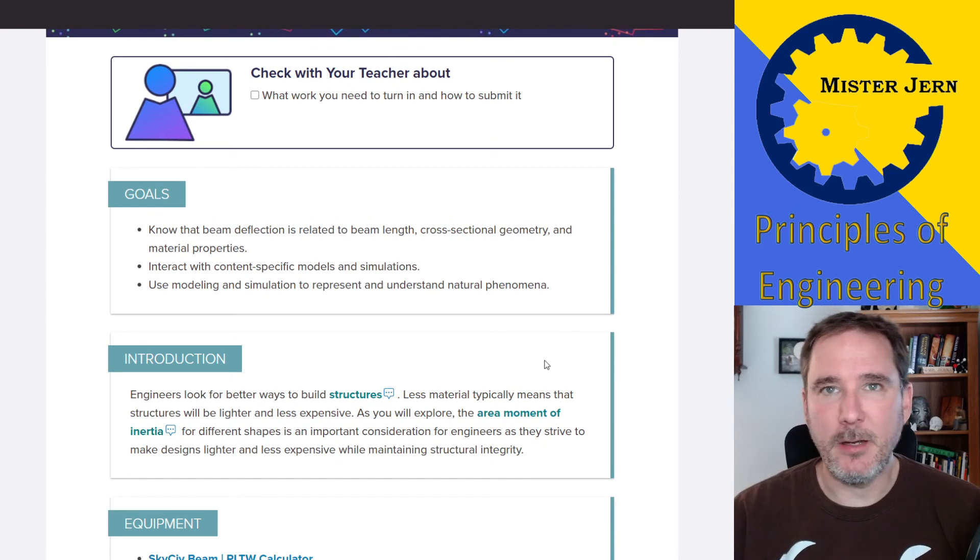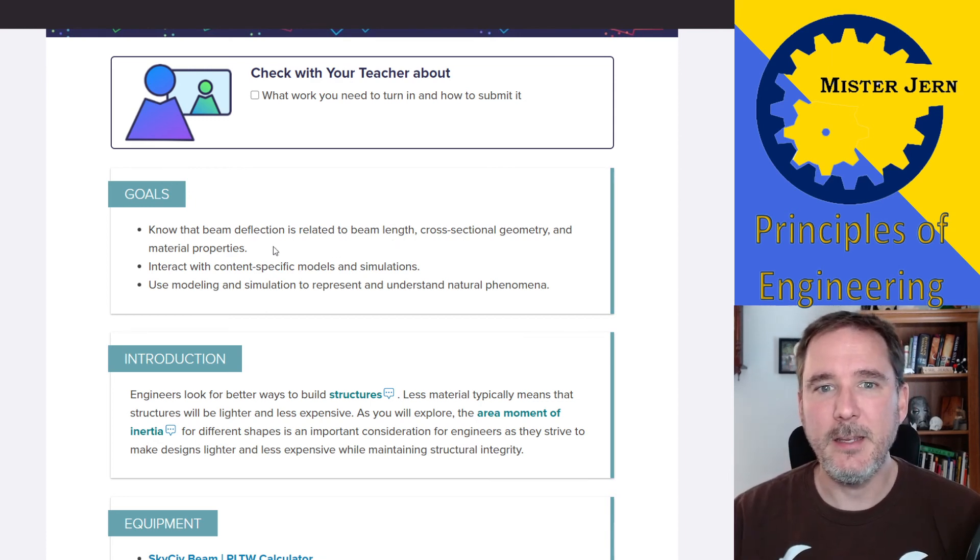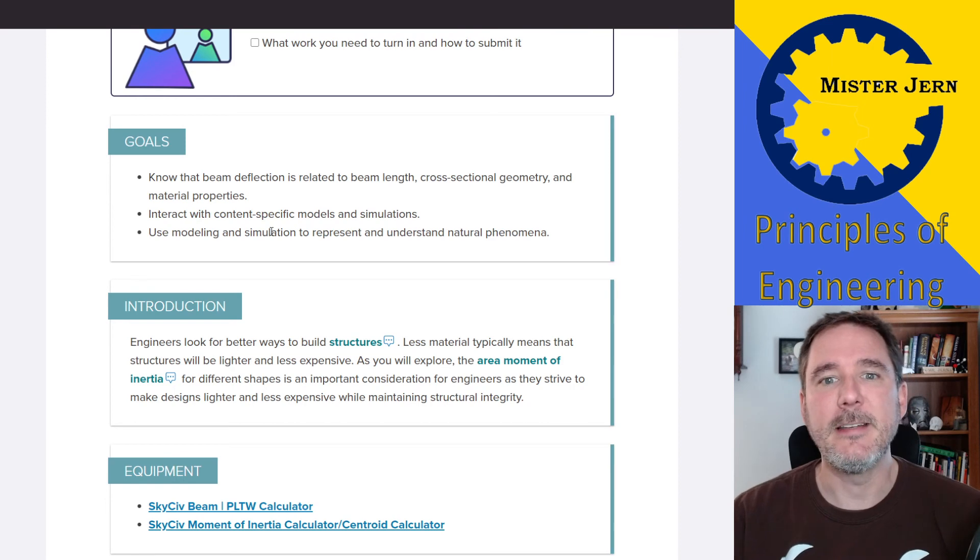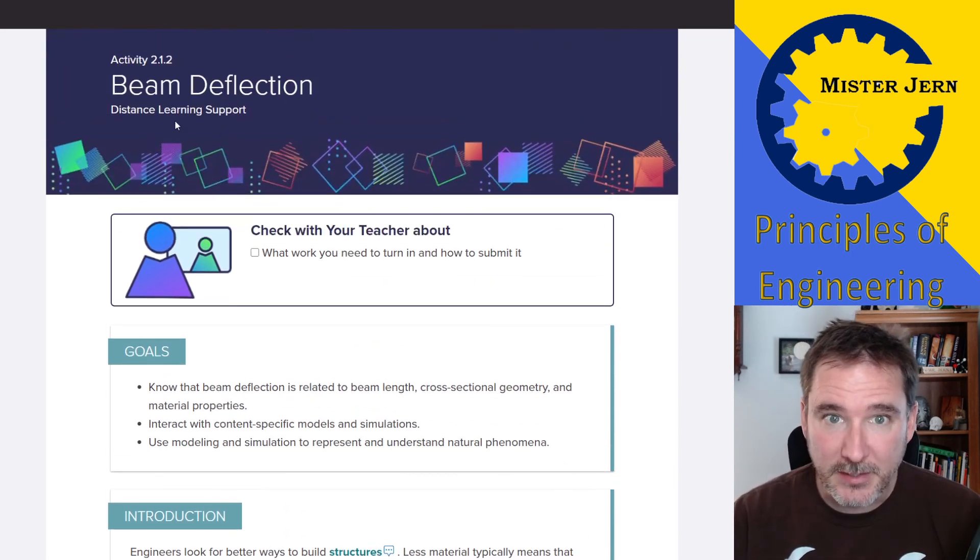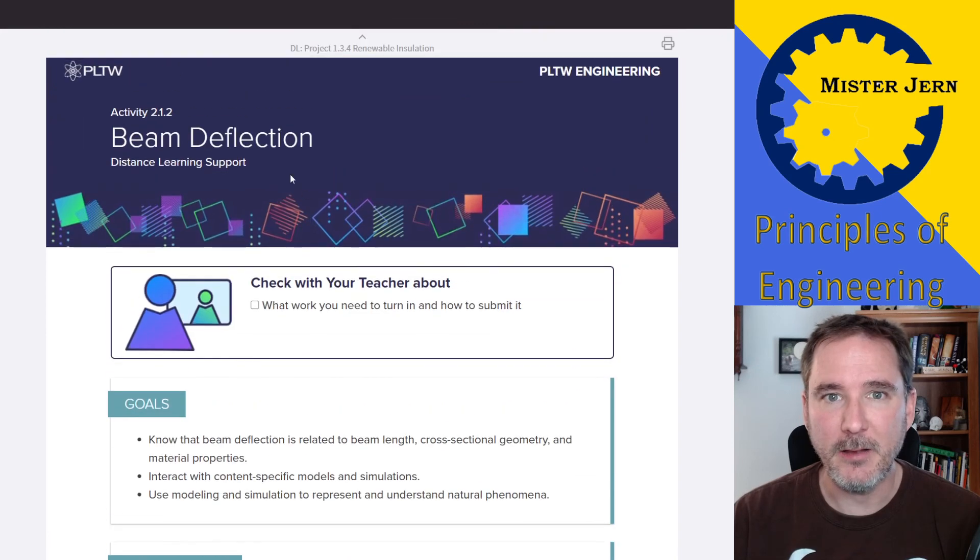This follows after we talked about the beam deflection and modulus of elasticity and all that stuff. So you're going to need to remember that stuff. The goals are listed right here: beam deflection related to beam length, the cross-sectional geometry, and the properties of the material itself. You're going to interact with some content-specific modules and simulations, and you're going to use some modeling to simulate natural phenomena because this is the distance learning version. Make sure you read through the introduction and familiarize yourself with it, after you set up your engineering notebook for this activity.